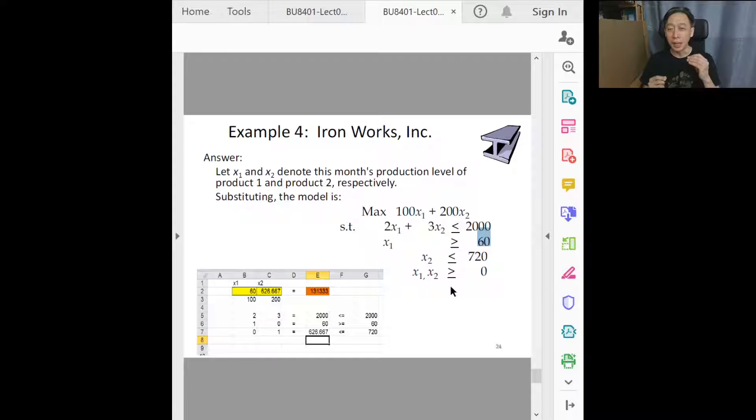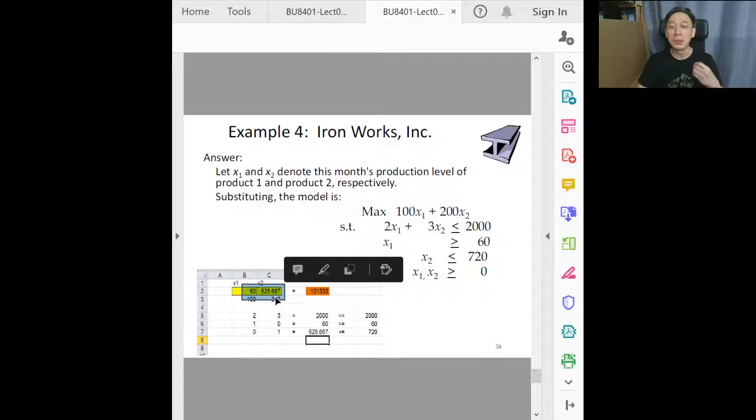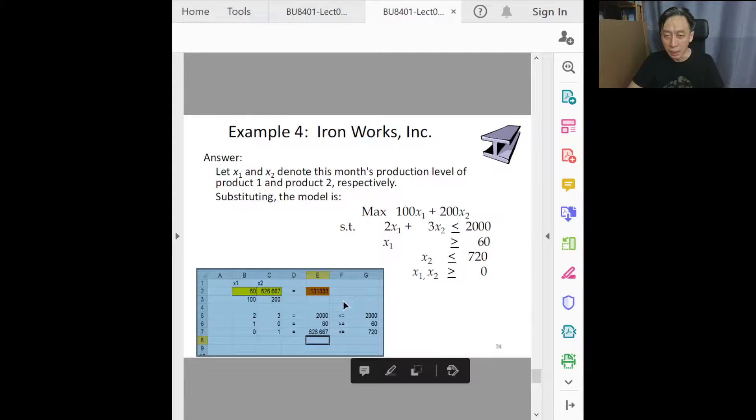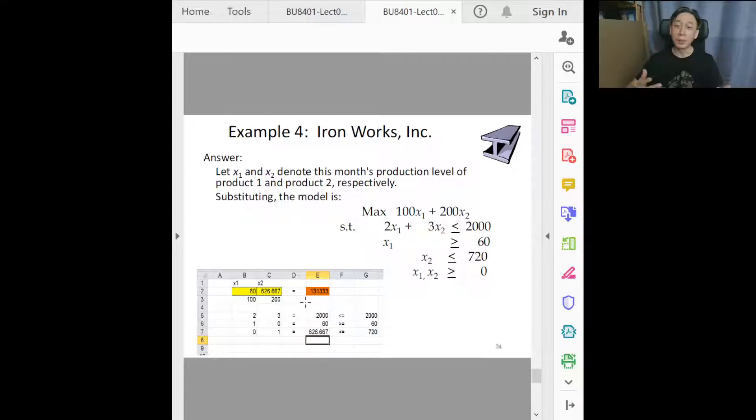What about the output? When we solve this model using Excel solver we get a solution, so solution definitely is output. The coordinate pair x1 equals 60 and x2 equals 626.67—they are the outcomes and therefore the output of this system. In addition, the indirect outputs that we get after making use of the primary information will include the objective function value. In other words, if we implement this solution we will get $13,133 every week as profit and no more.